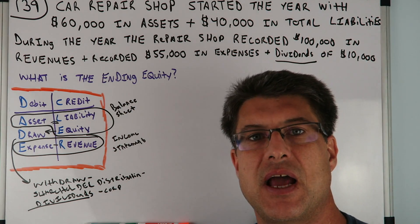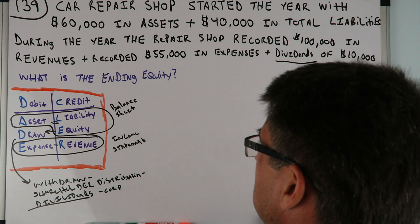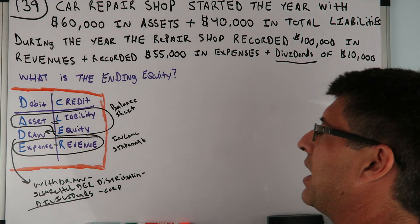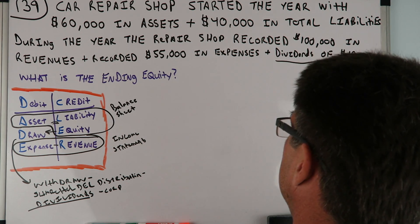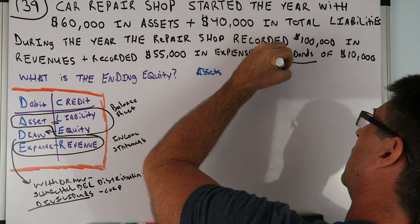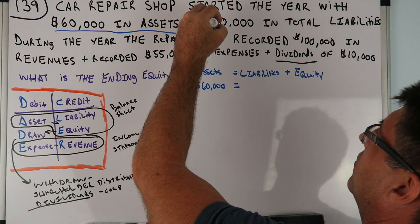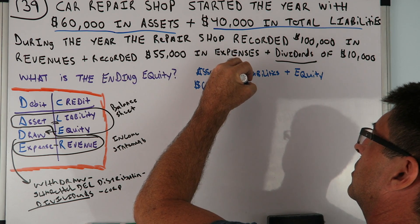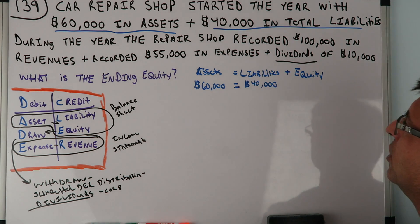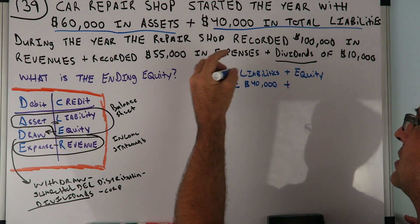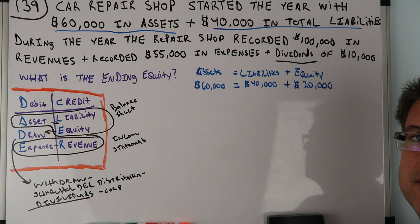If we're trying to find the ending equity, let's start by finding the beginning equity. Equity is found using the basic accounting equation: assets equal liability plus equity. Car shop started the year with $60,000 in assets and $40,000 in liabilities. So plugging in: $60,000 equals $40,000 plus equity — equity has to be $20,000. So we're starting the year with $20,000 in equity.